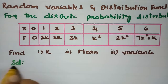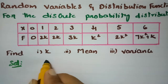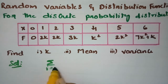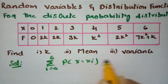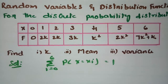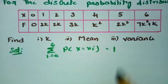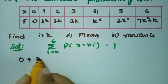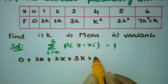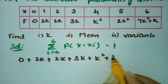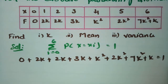Let's get started to find the value of k. Since there are 7 x values, the sum of all probabilities from i = 0 to 6 must equal 1. Therefore, adding all terms: 0 + 2k + 2k + 3k + k² + 2k² + 7k² + k = 1.